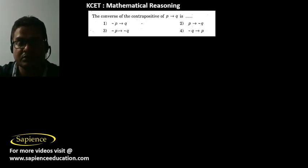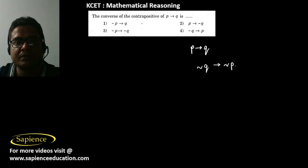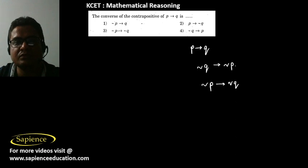Then, the converse of the contrapositive: the contrapositive of P then Q is 'if not Q then not P.' The converse of that is 'if not P then not Q', which is the correct answer.